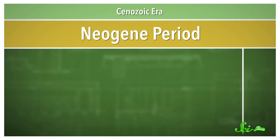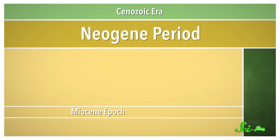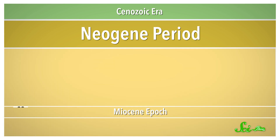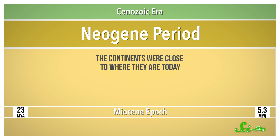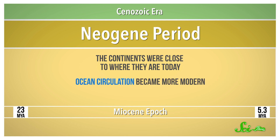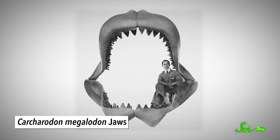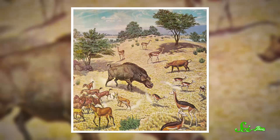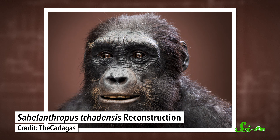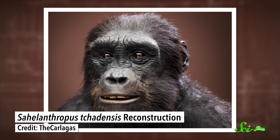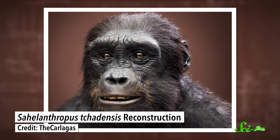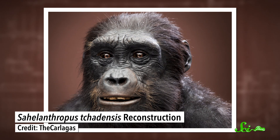The Neogene is divided into two epochs: the Miocene and the Pliocene. In the Miocene Epoch, beginning 23 million years ago, the continents were already close to where they are today. Ocean circulation became more modern too, which meant things were cooling down. The giant shark Megalodon patrolled the oceans. Grazers like horses and camels were all over the place, and toward the end of the epoch, in eastern Africa, a group of apes was learning how to walk on two legs.